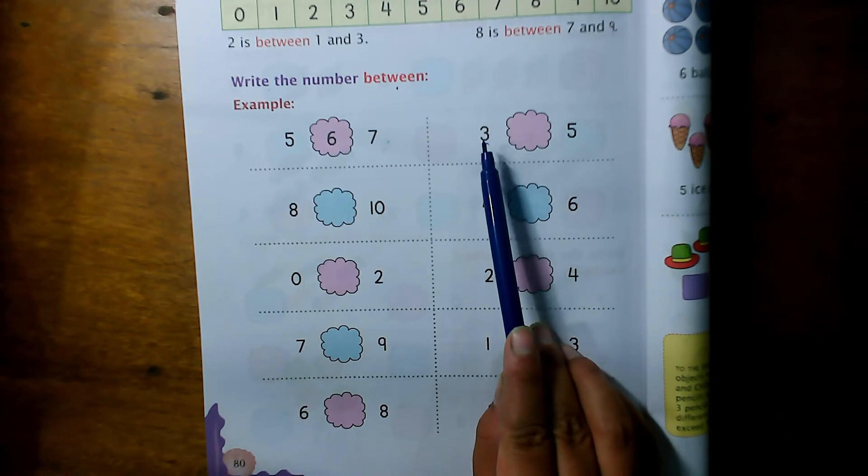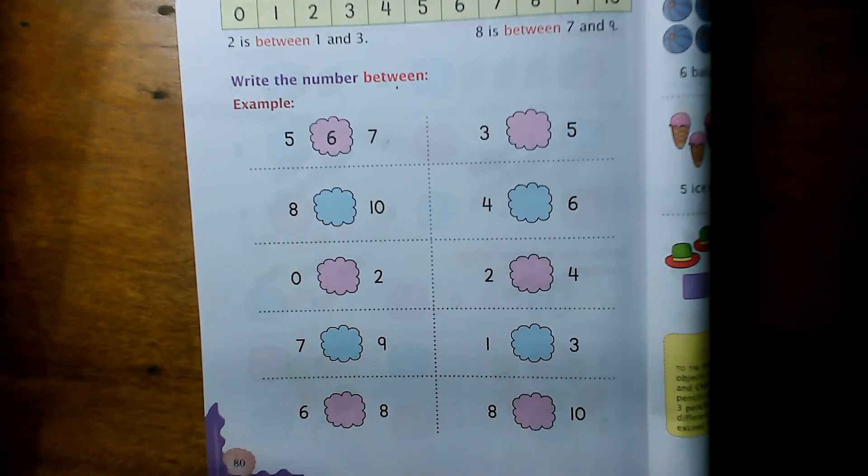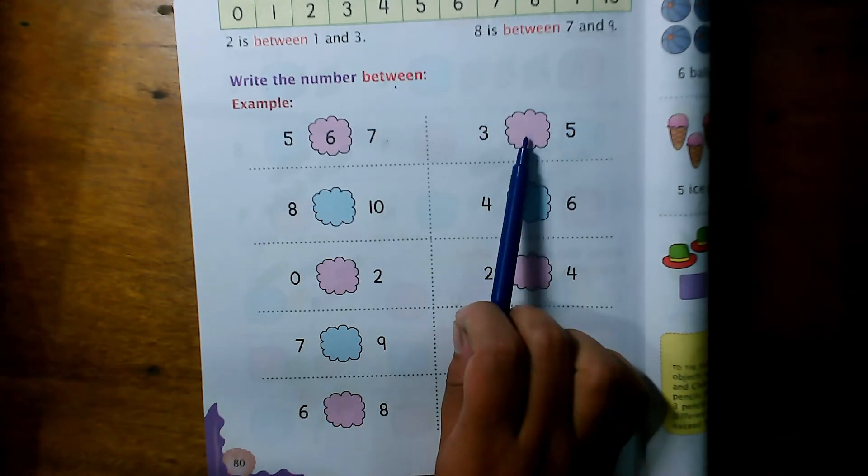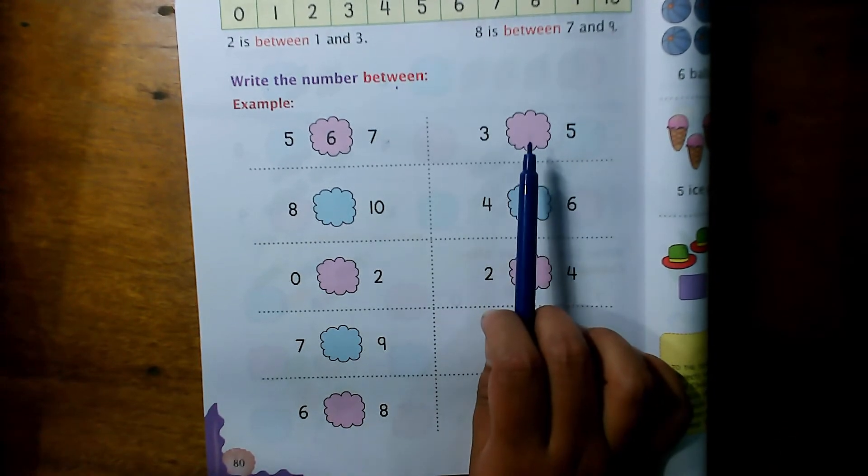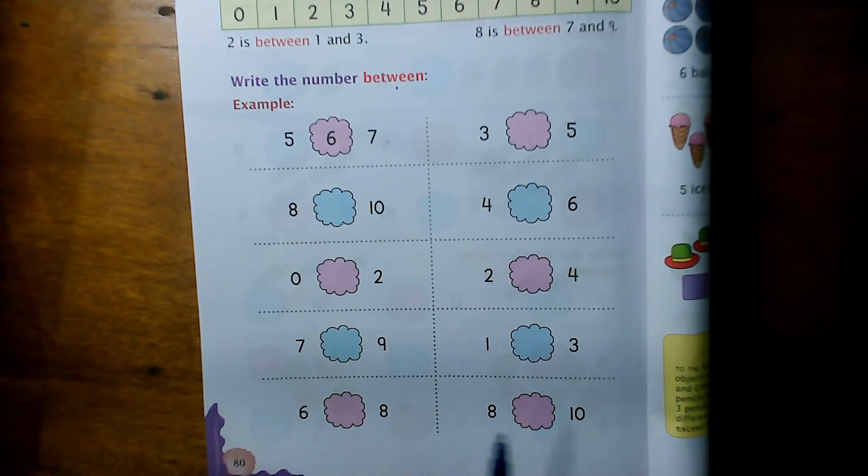What comes between three and five? What comes between three and five? Number four. Four comes between three and five. You have to do it with all the numbers.